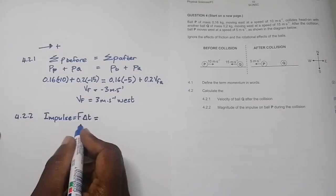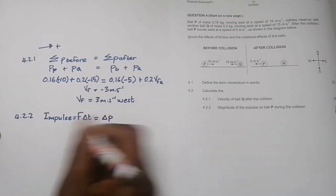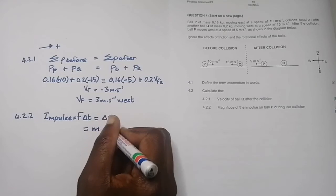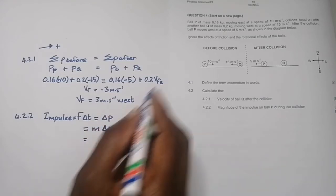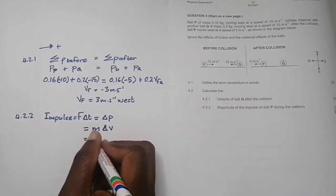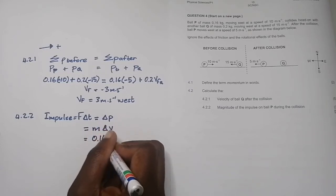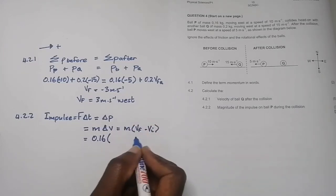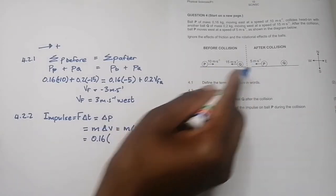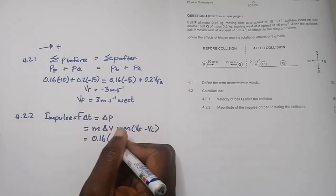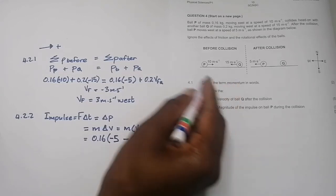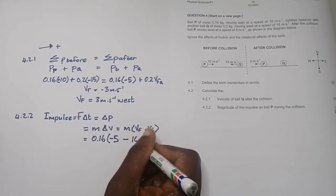Impulse can also be equal to the change in momentum, so it's going to be the mass multiplied by the change in velocity. We're looking at ball P, and the mass was 0.16. Change in velocity is final velocity minus initial velocity. The final velocity is the velocity after collision. For ball P, after collision it was moving at 5 meters per second, but in the negative direction, so that's minus 5 minus the initial velocity, which was positive 10. So minus 5 minus positive 10, that should be minus 10.